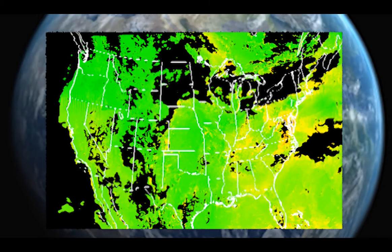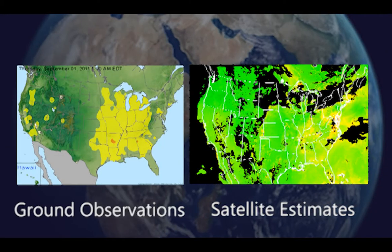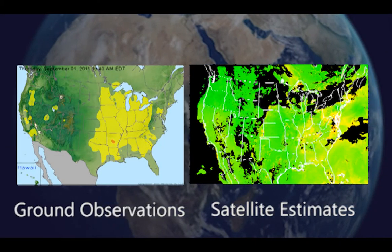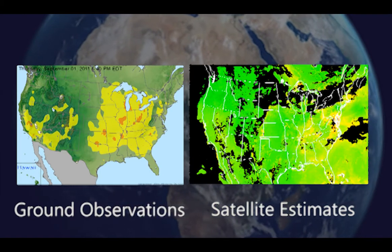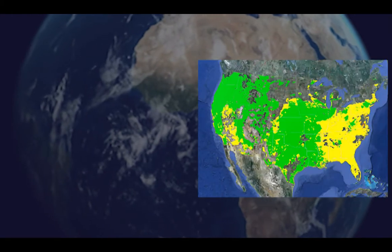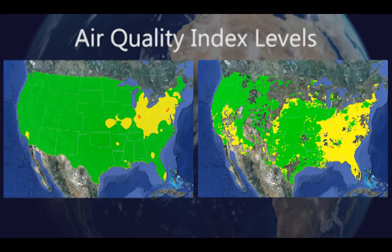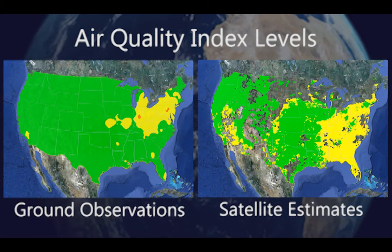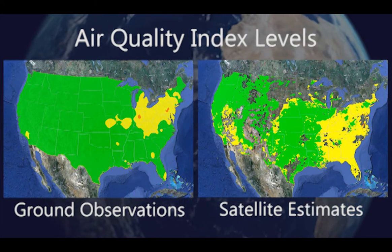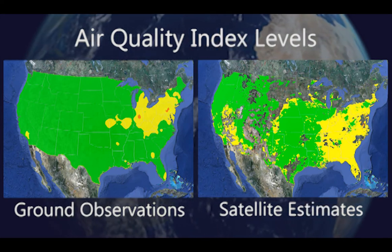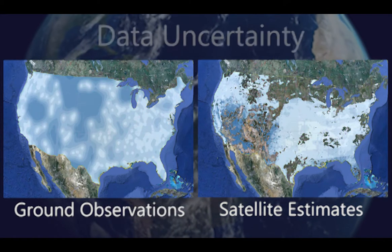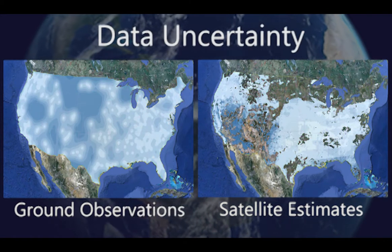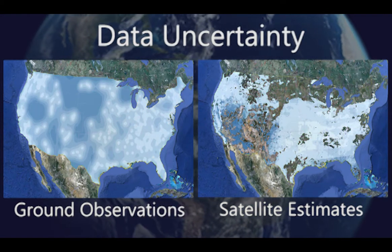The combination of satellite estimates and ground monitors can give us a more complete and more accurate picture of particle pollution across the United States. Through the ASDP, satellite estimates and ground-based observations of particle pollution are fused using a weighted average scheme. The relative weighting of ground observations and satellite estimates is based on the uncertainty of each data source at every grid point across the U.S.